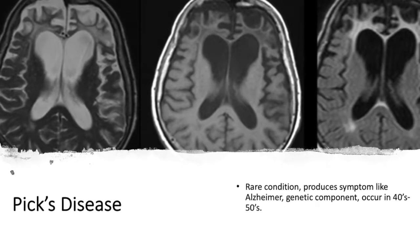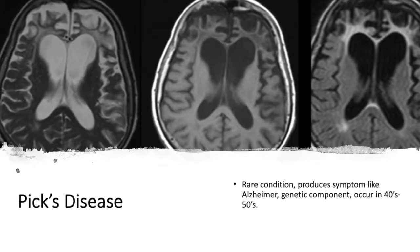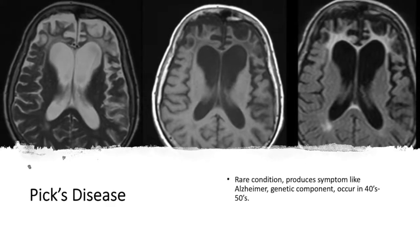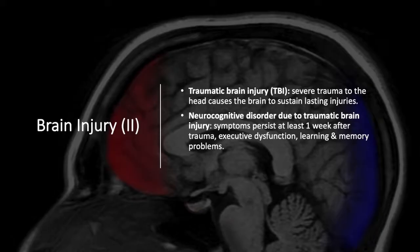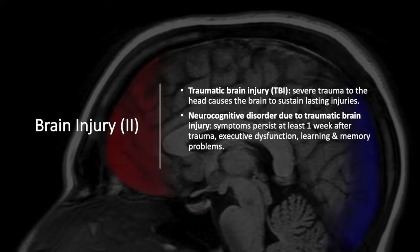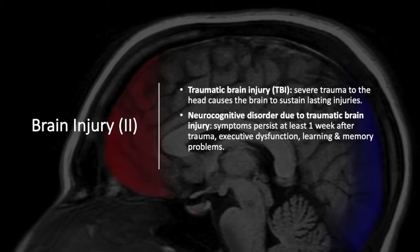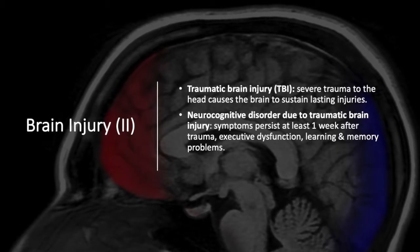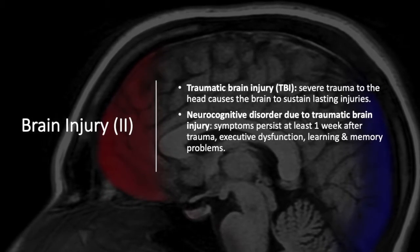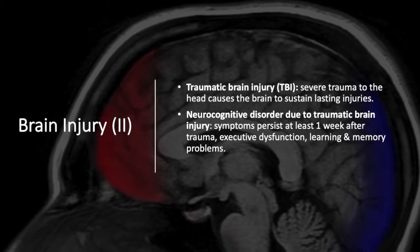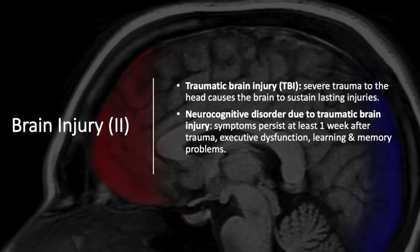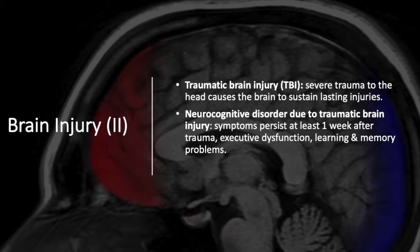Pick's disease is a rare condition that produces symptoms similar to Alzheimer's. It has a genetic component and its onset is around age 40 to 50. Traumatic brain injury is severe trauma to the head that causes the brain to sustain lasting injuries. Neurocognitive disorders due to traumatic brain injury are defined as when symptoms persist for at least a week after the trauma, resulting in executive dysfunction, learning, and memory problems.